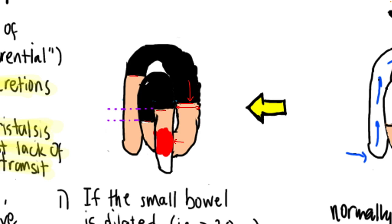Now in this picture, how many loops of bowel can you identify? A single loop is defined as a single U-shaped or inverted U-shaped tube of air. So this is one loop and this is a second loop. It is important to identify a single loop because we are going to measure the differences in height of the air fluid levels within it — air fluid level 1 and air fluid level 2 — and the difference in height between these two will be considered.